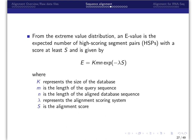From the extreme value distribution, an E value is the expected number of high-scoring segment pairs with a score of at least S and is given by this equation where K represents the size of the database, M is the length of the query sequence, N is the length of the aligned database sequence, and lambda represents the alignment scoring system. Of course, S is the alignment score.